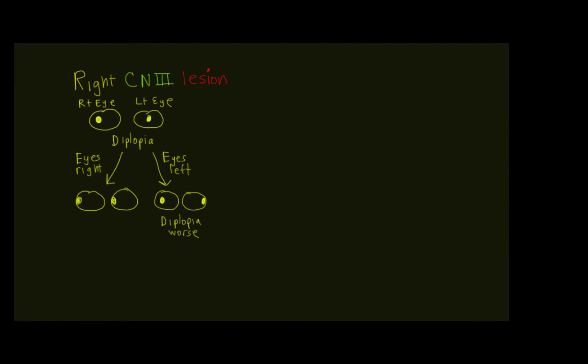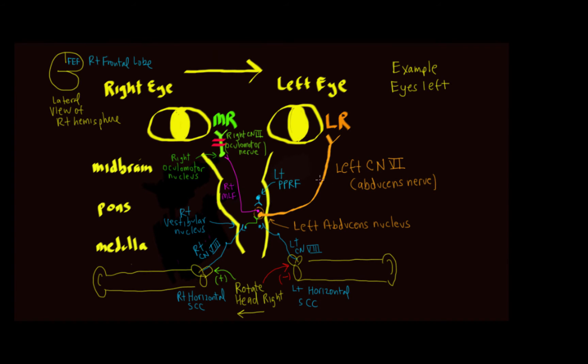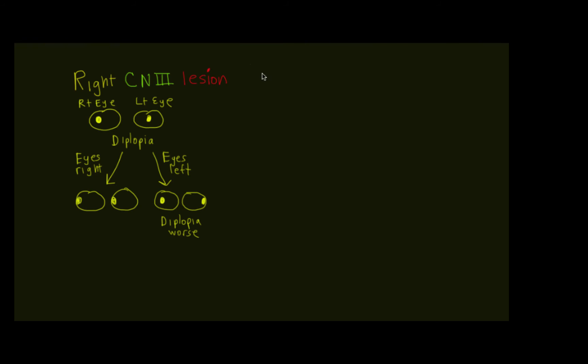Now if we had a six lesion on the left side, we'll draw the eyes again. There's the right eye, there's the left eye. And we notice at baseline, looking straight ahead, there's no problem, no double vision.